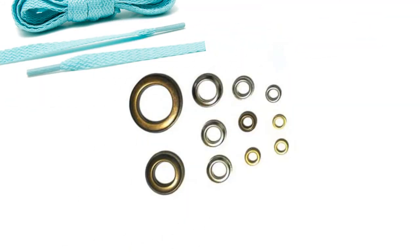Second one is eyelets. There are different types of eyelets: open eyelets and closed eyelets.